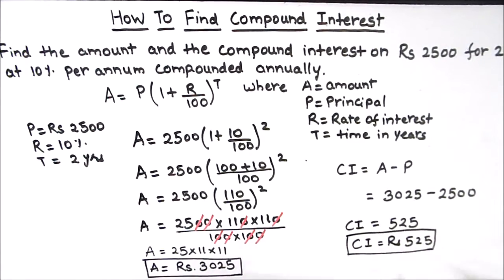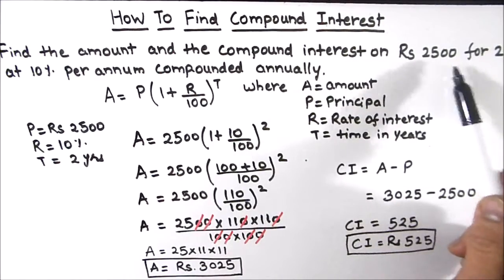We'll box the answer. So this is how we find the amount and compound interest. Amount is 3025 and compound interest is 525. That means at a rate of 10 percent per annum for two years, if you borrow 2500 from the bank, you will have to pay 525 as compound interest.